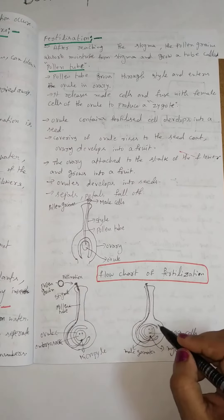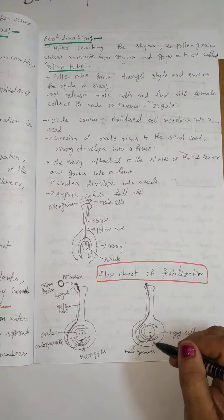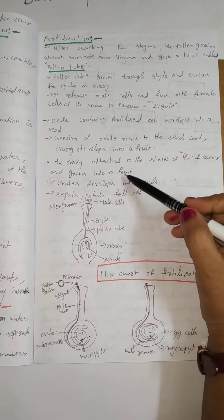The ovary coat is the seed coat. The ovule's coat is the seed coat. The ovary attaches to the stalk of the flower and grows into a fruit.